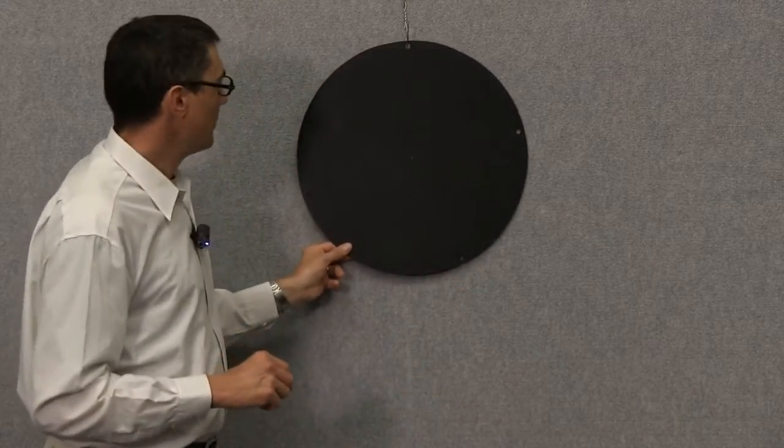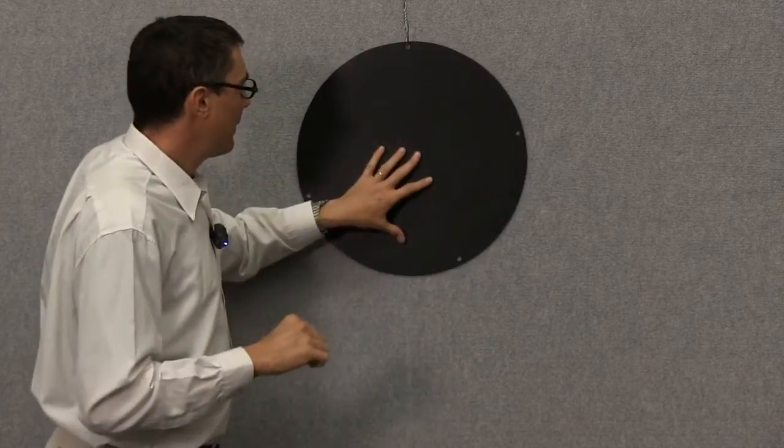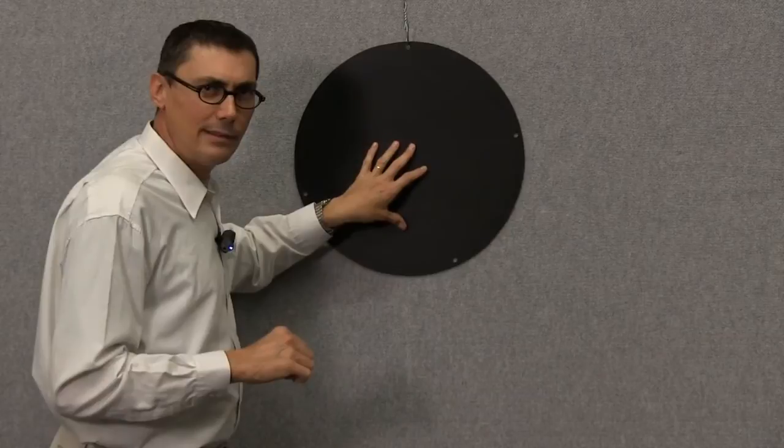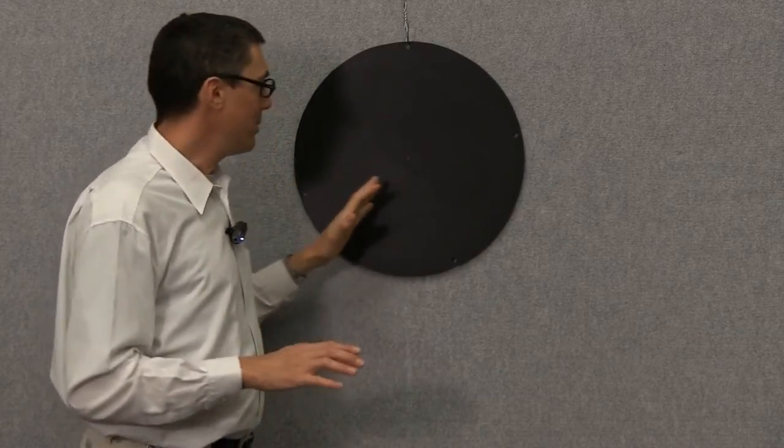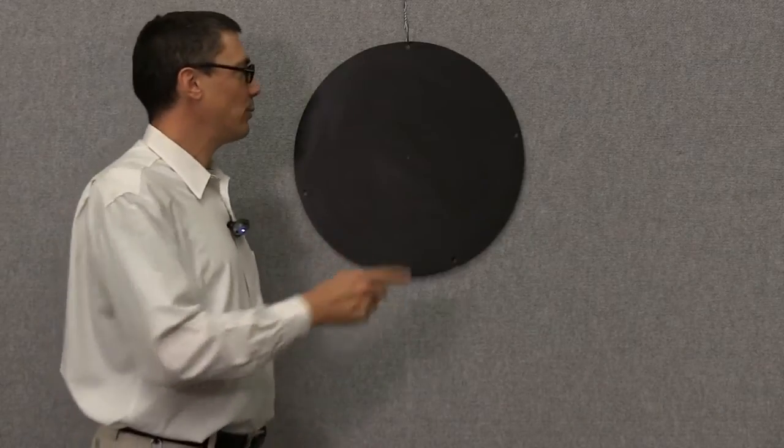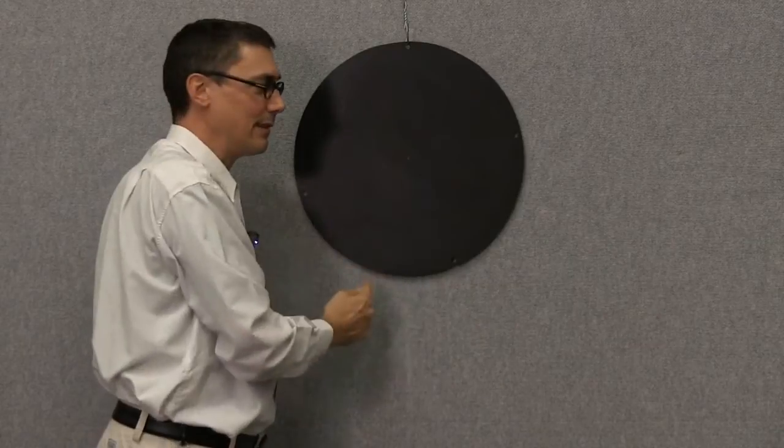I've got here a circle and the trick that I'm going to take advantage of is this. If an object is suspended and it's not swinging, so it's at equilibrium position, the center of mass will lie directly underneath the point of suspension. So somewhere along this line is the center of mass.